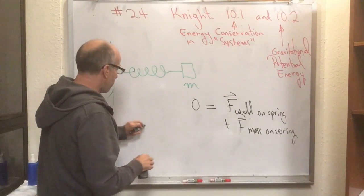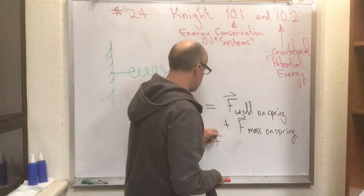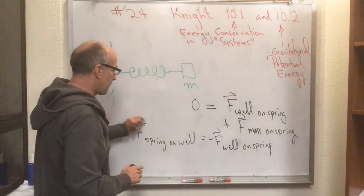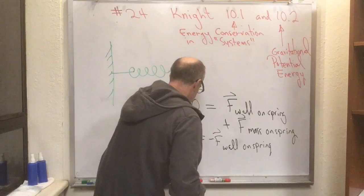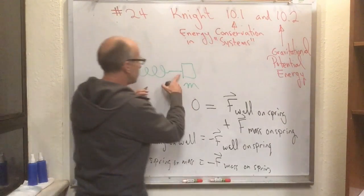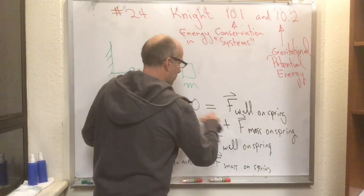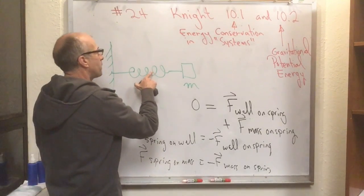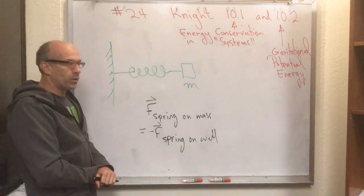Now we have two more equations. The force of the spring on the wall is equal to minus the force of the wall on the spring — that's Newton's third law applied to that interaction. And we just showed that the force of the wall on the spring equals minus the force of the mass on the spring. Combining all three equations, you get that the force of the spring on the mass equals minus the force of the spring on the wall. This is only true if you can neglect the mass of the spring.